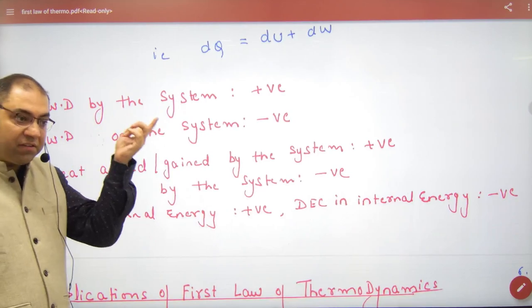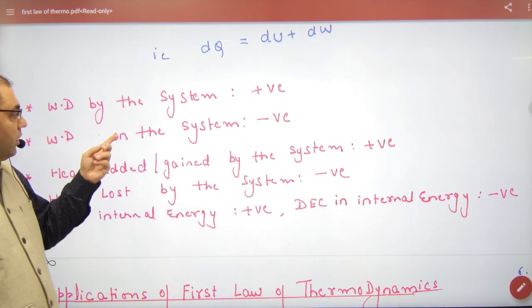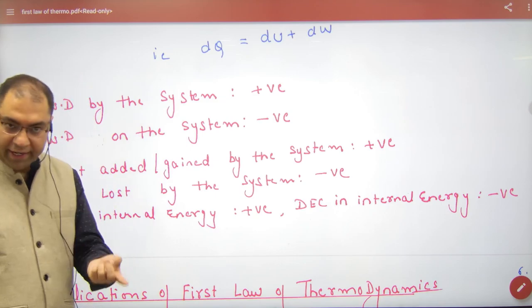Work done by the system in physics: positive. Work done on the system: negative. Chemistry convention.